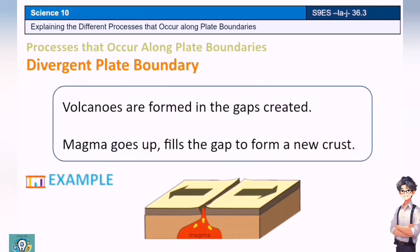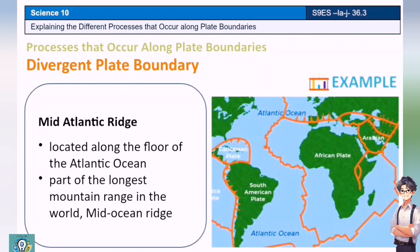Let's start with the divergent plate boundary. Upon moving of the plates away from each other, gaps are created and volcanoes form. Magma goes up and fills the gap to form a new crust. One example of a divergent plate boundary is the Mid-Atlantic Ridge, located along the floor of the Atlantic Ocean. It is part of the Mid-Ocean Ridge, the longest mountain range in the world.